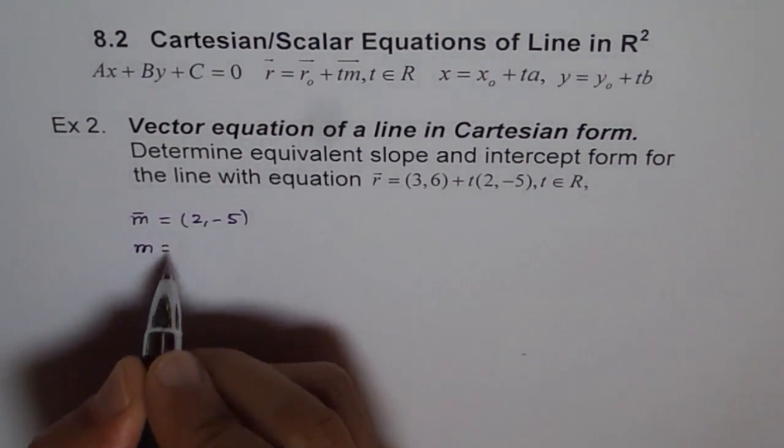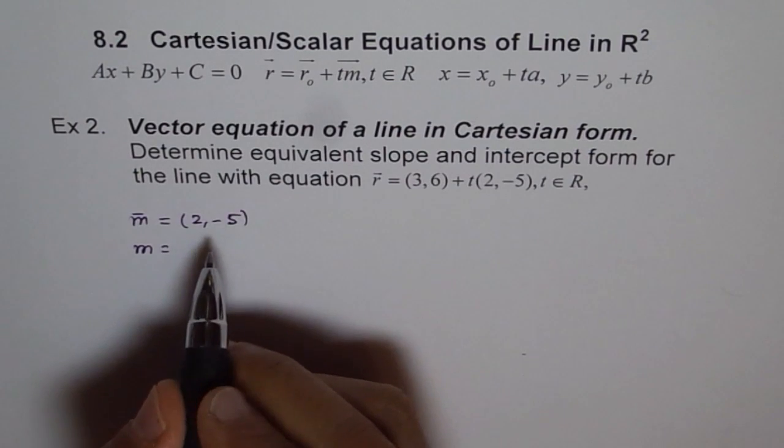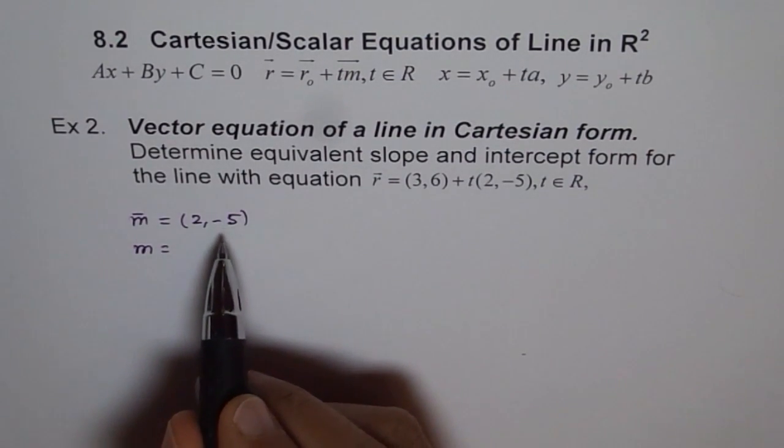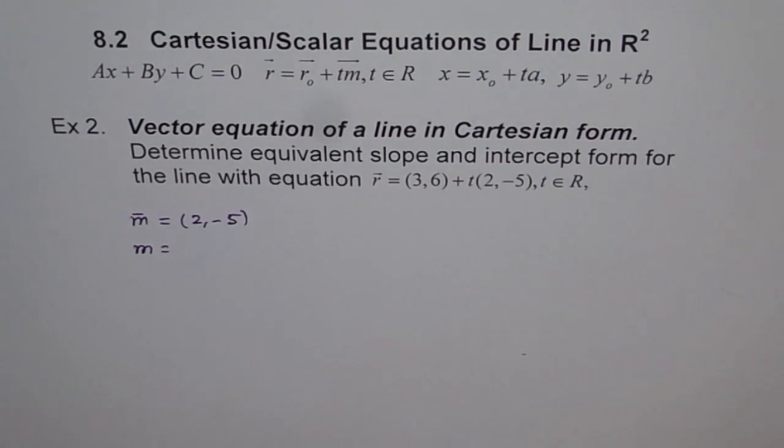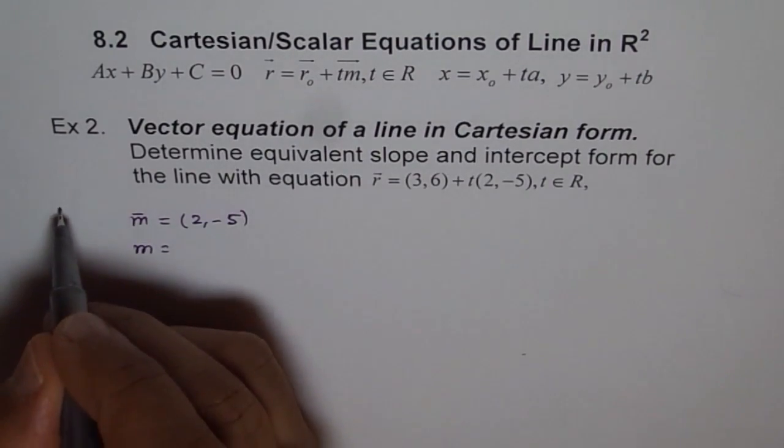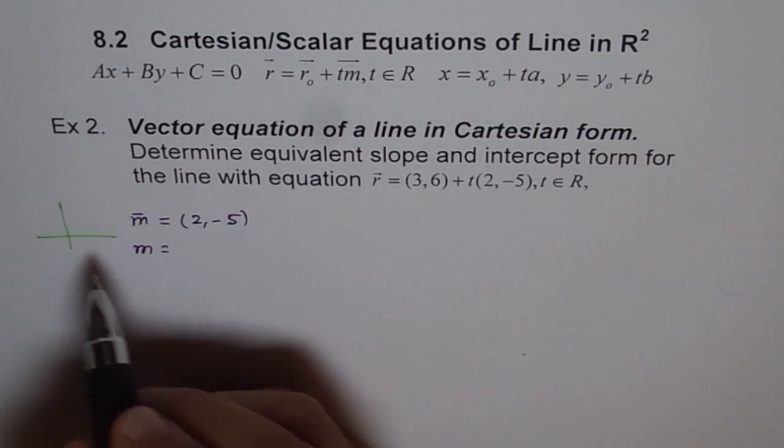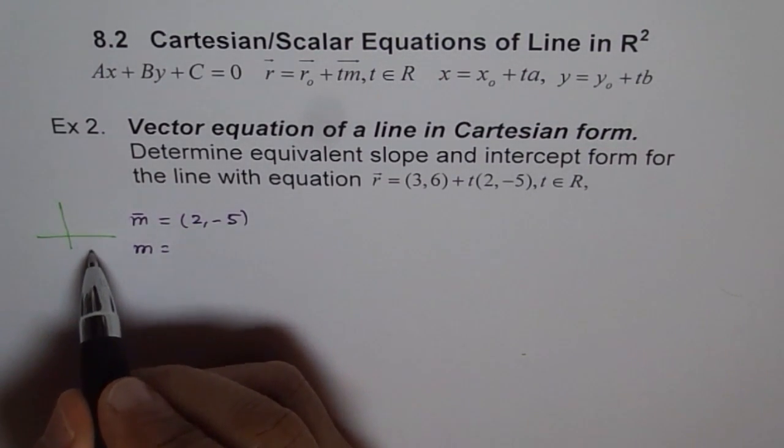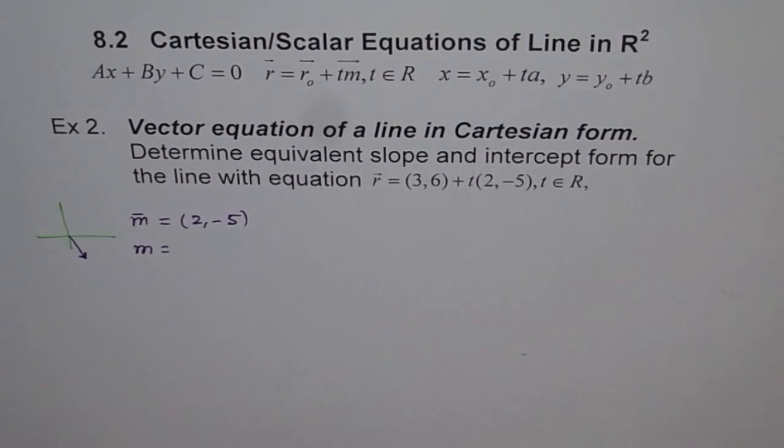The slope of the line is change in y over change in x. Remember the direction vector is always from the origin, correct? So this is the point from the origin. So basically when I say direction vector is this, you should try to understand it like saying that from the origin 2 for x and -5 for y. So it is kind of line like this. So that is the direction vector, right?